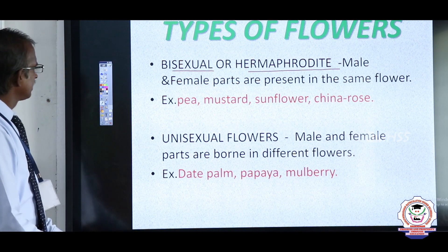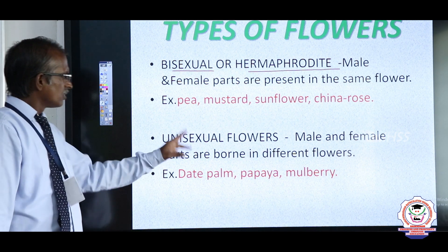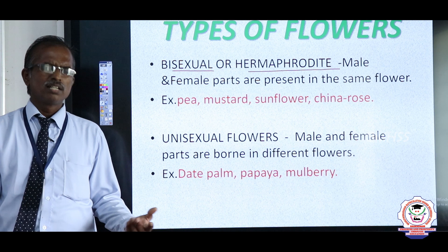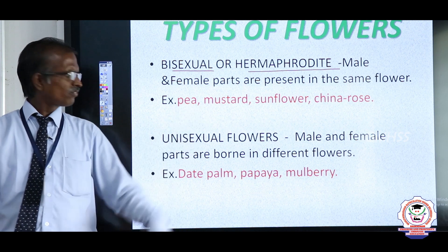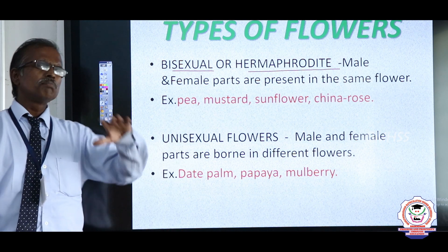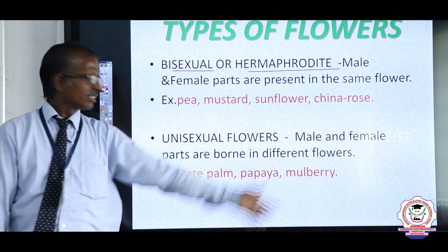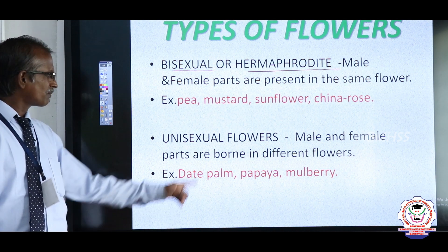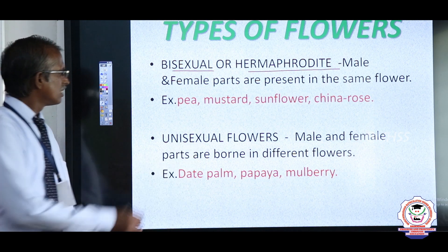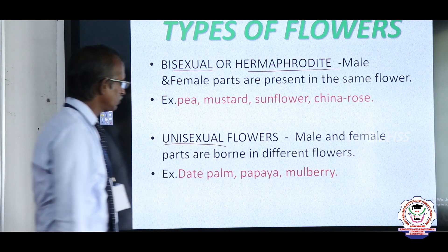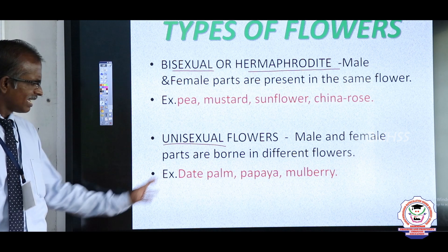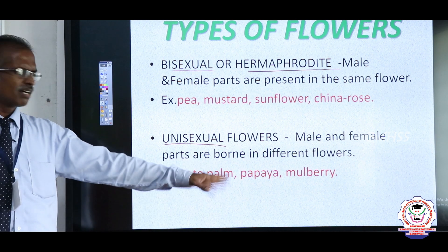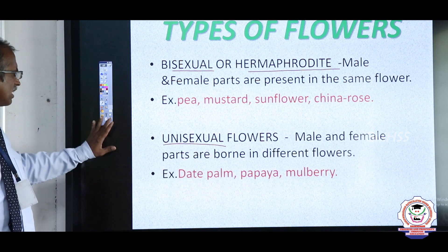Next is unisexual. In some flowers, the male and female parts are borne in different flowers. Such a flower is known as unisexual. Examples include date palm, papaya, mulberry, etc.